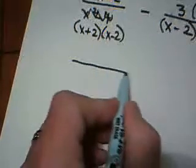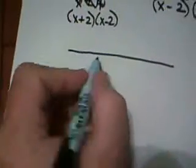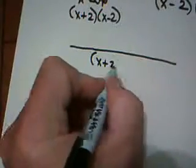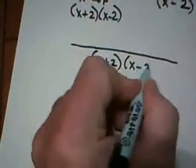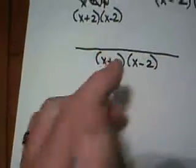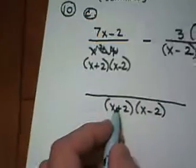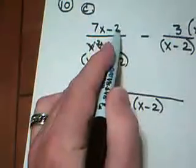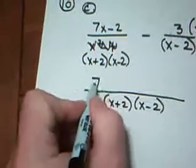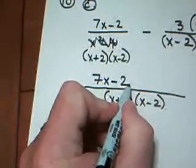Now, we have the same denominator, x plus 2, x minus 2 one time, because that's our common denominator. So here, we work with the numerators. 7x minus 2 is the first numerator.